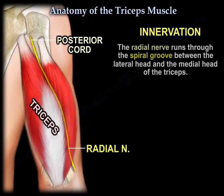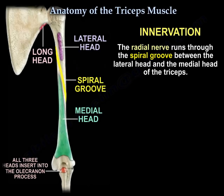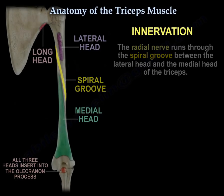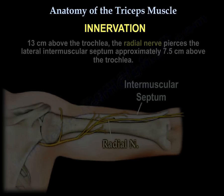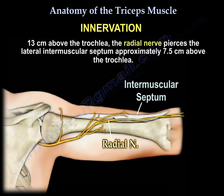The radial nerve runs through the spiral groove between the lateral head and the medial head of the triceps, 13 cm above the trochlea, and it pierces the lateral intermuscular septum approximately 7.5 cm above the trochlea.